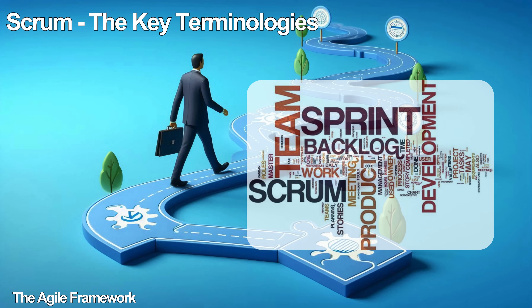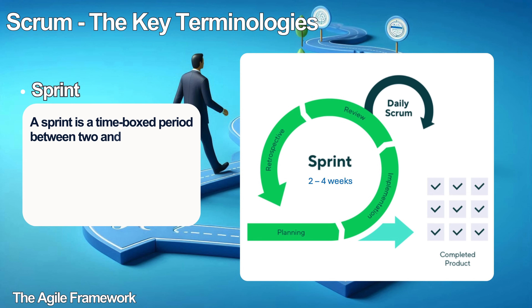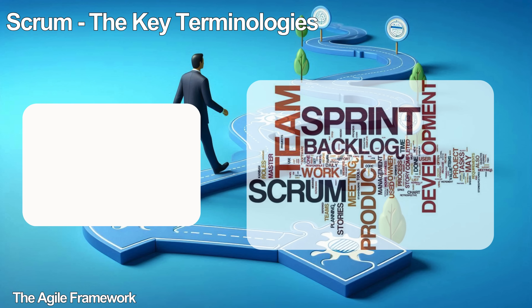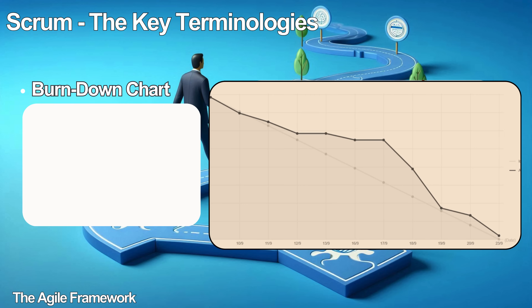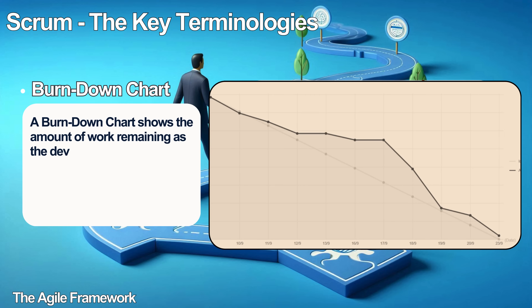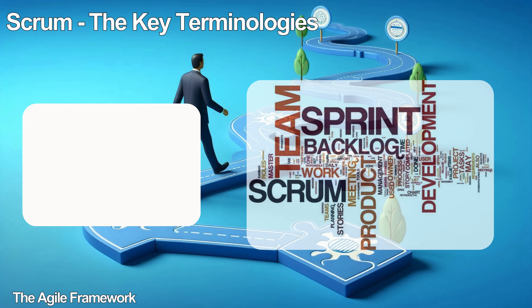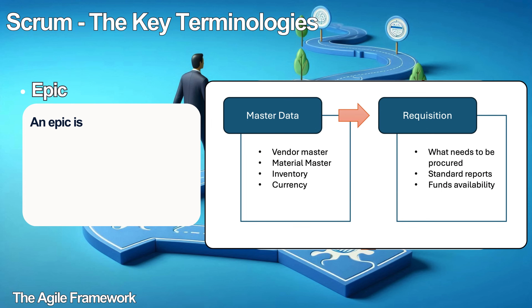Let us describe some of the jargon used in the Scrum framework. Firstly, what is a sprint? A sprint is a time-boxed period between two and four weeks when the Scrum team resolves the business problem by providing working software. Secondly, what is a burndown chart? A burndown chart shows the amount of work remaining as the development team moves forward into the project. The chart can be used to display a specific sprint or the complete product backlog. Thirdly, an Epic — simply put, an Epic is a large user story that spans multiple sprints.